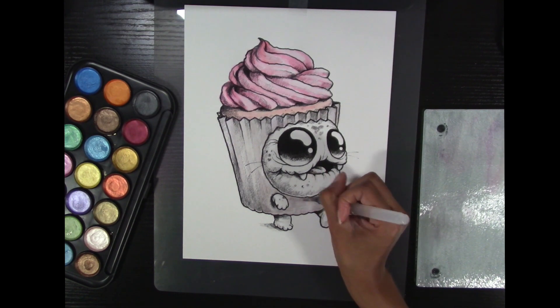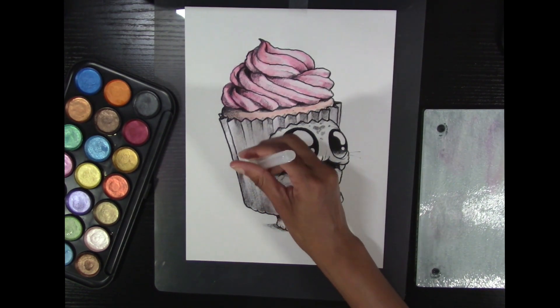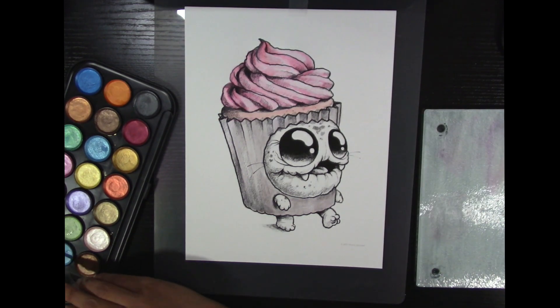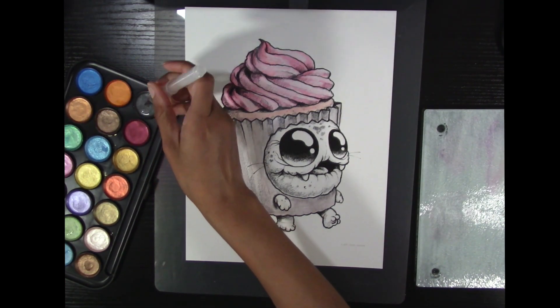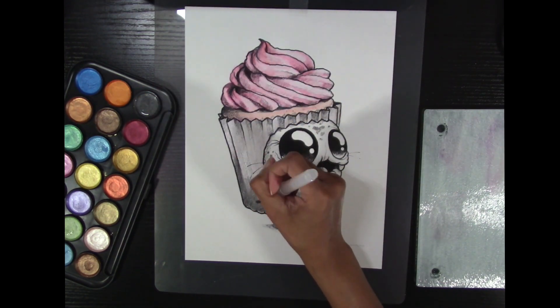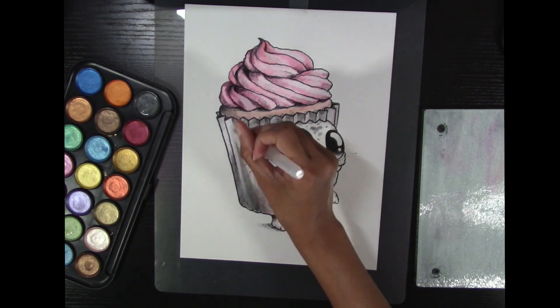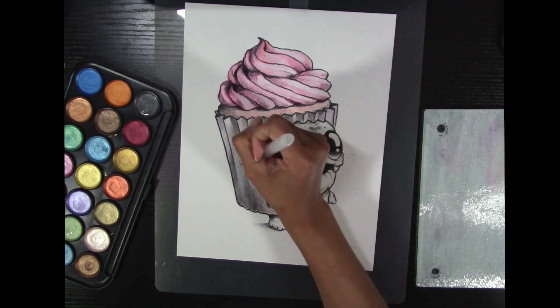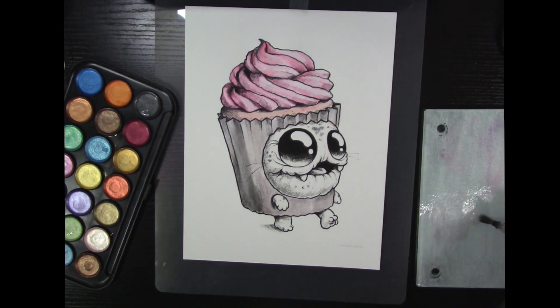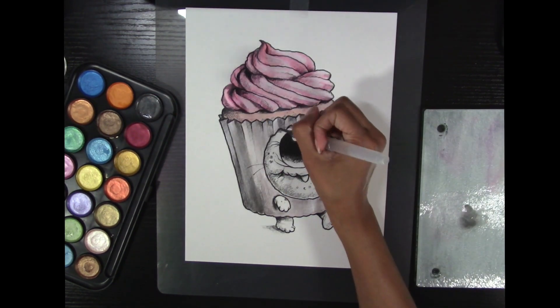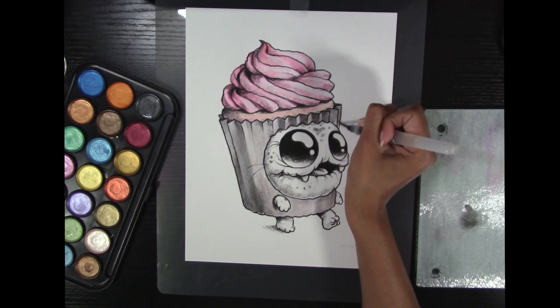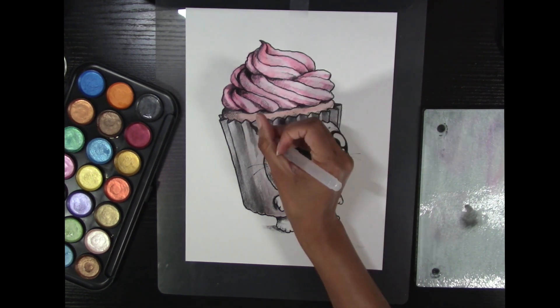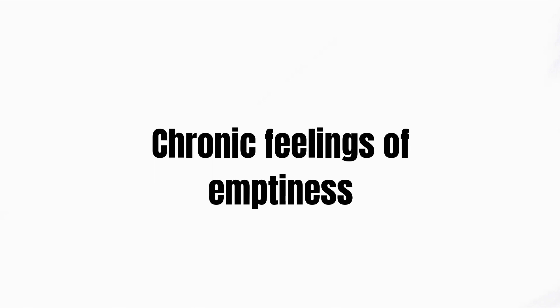Number six is affective instability due to a marked reactivity of mood. An example would be intense episodic dysphoria, irritability, or anxiety, usually lasting a few hours but no more than a few days. This emotional instability tends to be a day-to-day event and is different from bipolar disorder because the shift is shorter. For bipolar disorder, the fluctuation should persist at least four days for a hypomanic episode and seven days for a manic episode. Their hyper-reactivity tends to be overly intense compared to the circumstance, but generally short-term, within a couple of days.